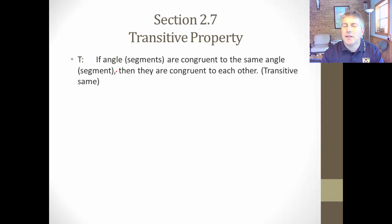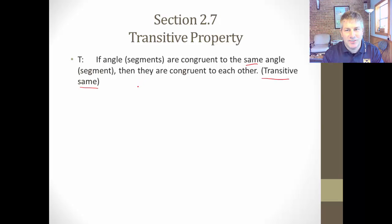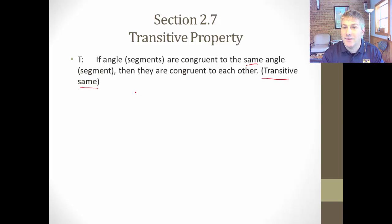So the transitive property, for our purposes in geometry, will apply to both angles and segments. We'll say: if angles or segments are congruent to the same angle or segment, then they're congruent to each other. And for proof purposes, I will let you shorten that to 'transitive same' — just like we had addition same and subtraction same, we're going to have transitive same.